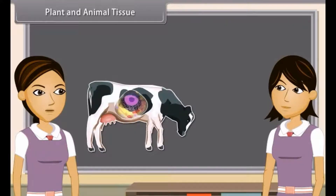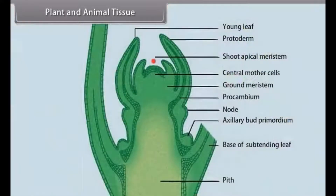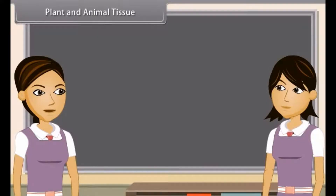Animals are heterotrophic and have to move around in search of food, mate and shelter. So they need more energy in comparison to plants. That is why most of the tissue in animals are living. One more big difference between plants and animals is pattern of growth. The growth in plants is limited to some regions where there are some dividing tissues. But in animals, the growth is not restricted to some places — it is uniform growth. In animals, structural organization of organ systems is more specified and localized.